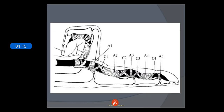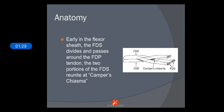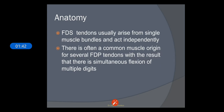We also have pulleys directing these two tendons, which we have already covered in the biomechanics lecture. We have the annular and the cruciate pulleys. Within the flexor tendon sheath, the flexor digitorum superficialis divides and passes around the FDP tendon. The two portions of FDS reunite at a point called Camper's chiasma. The FDS tendon usually arises from single muscle bundles and acts independently. There is often a common muscle origin for several FDP tendons, resulting in simultaneous flexion of multiple digits.